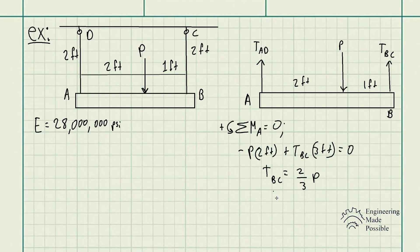We see the tension in cable BC is equal to two-thirds of that external load P. By intuition alone, we could already tell that the tension in the other cable is only going to be one-third of that, because the total tension in those two cables is equivalent to that external load.